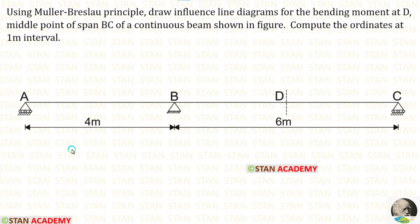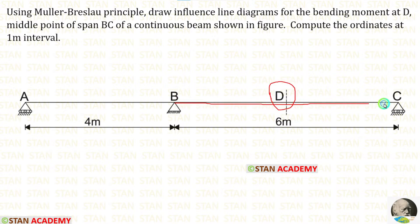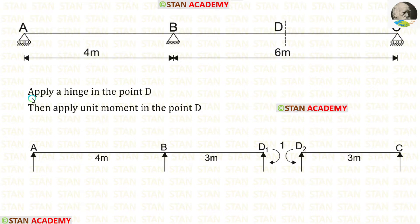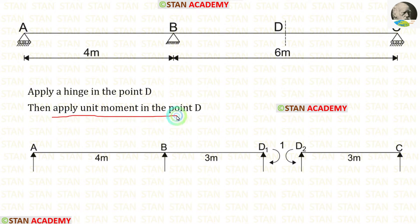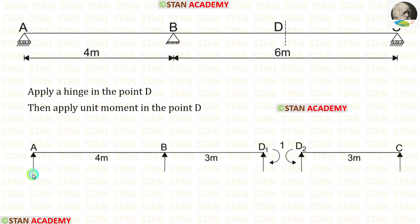A 2-span continuous beam is given. In this continuous beam, we have to make an influence line diagram for bending moment at point D, that is the middle point of span BC. Let us apply a hinge at point D, then apply a unit moment at point D. Let us separate this continuous beam into two parts: AD1 and D2C.